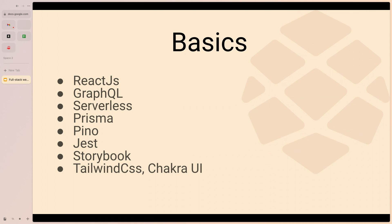Prisma is basically an ORM — if you've dealt with ORMs previously, it's a way to interact with your database. You can do queries and any sort of transaction, and it gives you a unified interface to talk to a Postgres, MySQL, or MongoDB database with a unified API. Jest is a testing framework you can use on both the backend and the frontend.